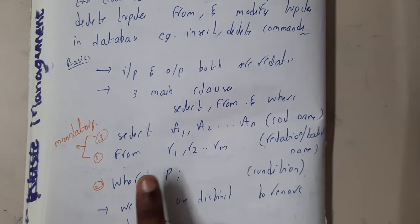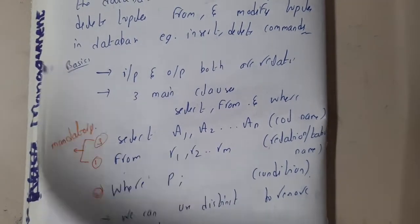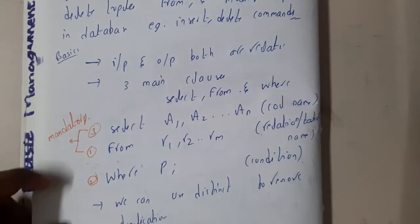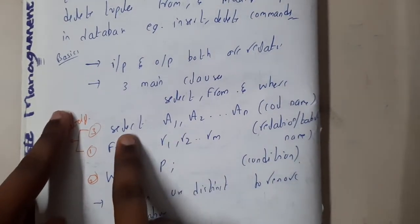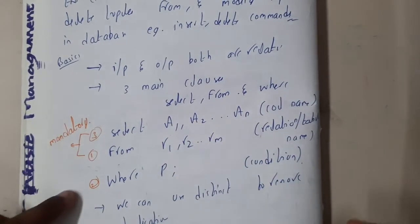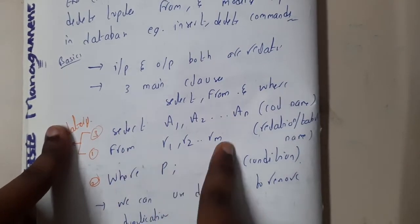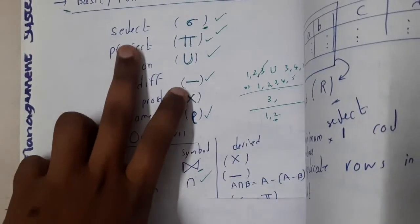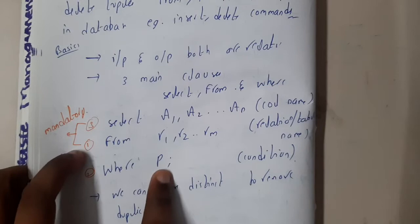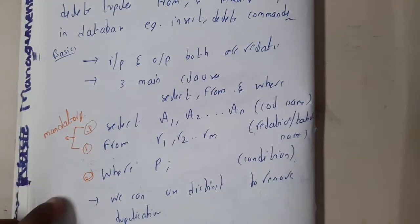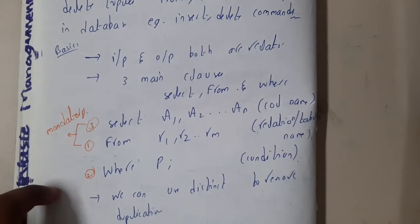To recall from relational algebra: SELECT corresponds to projection, and WHERE corresponds to selection (sigma). In SQL, SELECT lists the column names (A1, A2, A3...) you want to retrieve, FROM specifies the table or relation name, and WHERE specifies the condition — equivalent to pi in relational algebra. The first two clauses are mandatory in every SQL query.